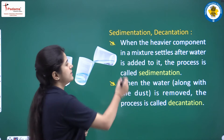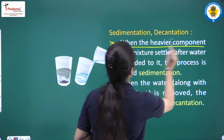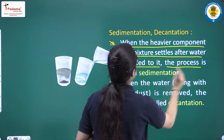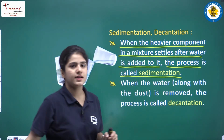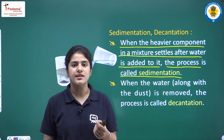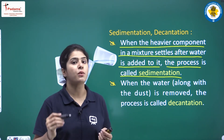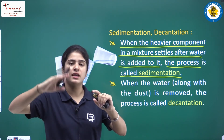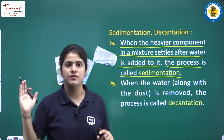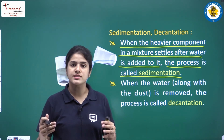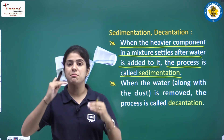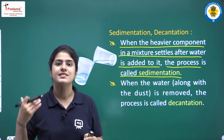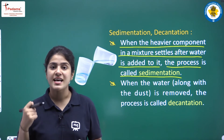When the heavier component in a mixture settles after water is added to it, the process is called sedimentation. The sand is heavy and it settles in the water, while water is lighter and remains at the upper layer of that particular mixture. So the process in which water and sand separate into different layers is sedimentation.